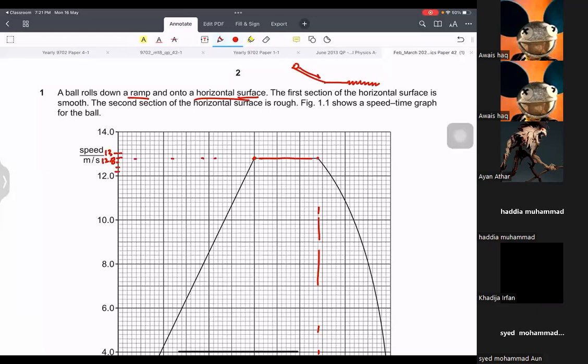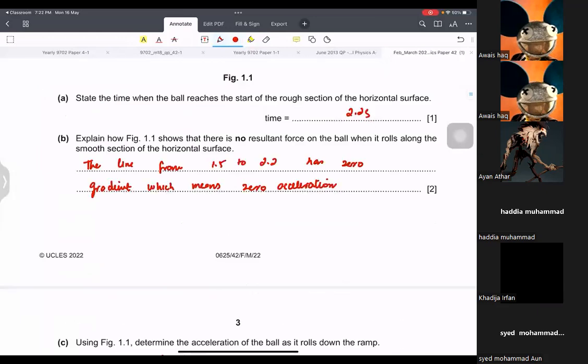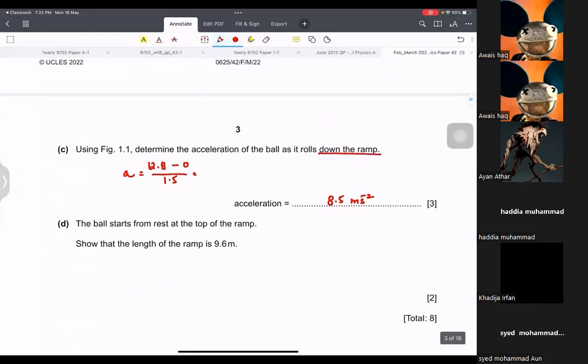We have to find the acceleration of the ball. It's rolling down the ramp. So the ramp is like this. When the ball is going down, it is increasing speed. And then it becomes smooth because now it's flat. And if it is rough, now the speed will decrease. So for this section, the graph looks like this. For this section, it looks like this. And for this section, it looks like this. Do you understand?